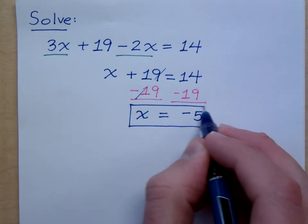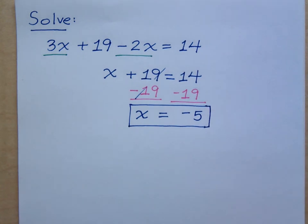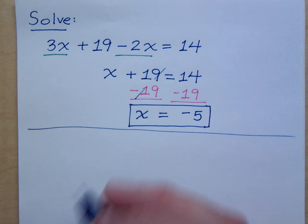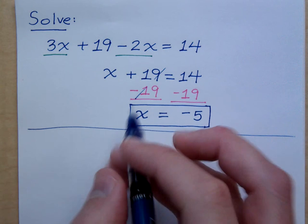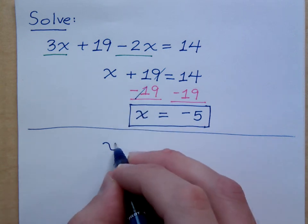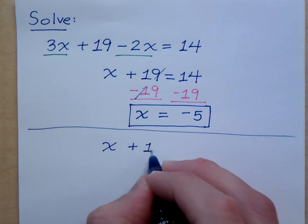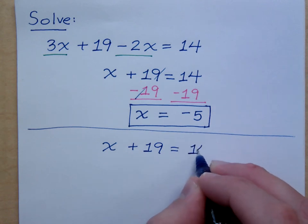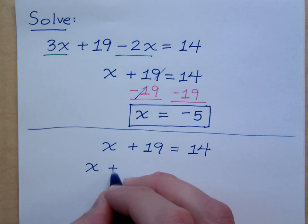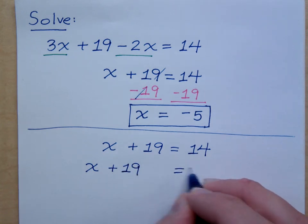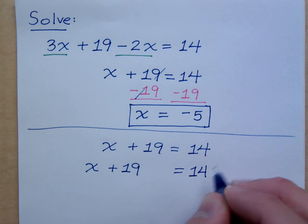Now, this is just one of many ways to show the work here for this problem. As long as everything you do here is valid, there are different ways of working this out. Let me go back here to where I have the x plus 19 equals 14. By using the addition property, that said I can add or subtract the same thing on both sides.